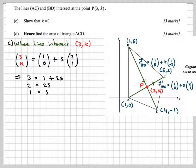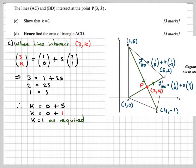If S is equal to 1, we now solve for the Y component. So K will be equal to 0 + 1 times S. But we know that S is 1 from the previous part here. So K will be equal to 0 + 1. And we've shown that K is equal to 1 as required. It then says, hence, find the area of this triangle here.